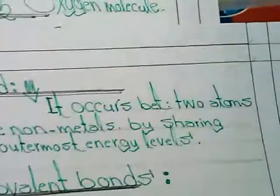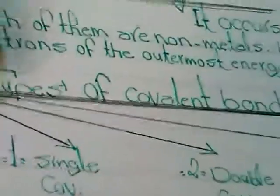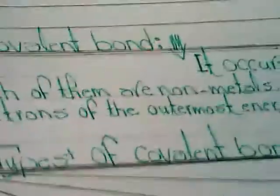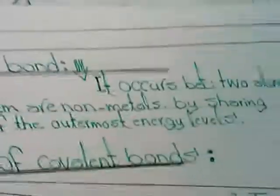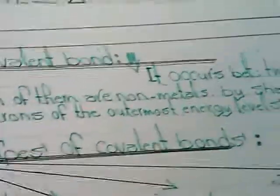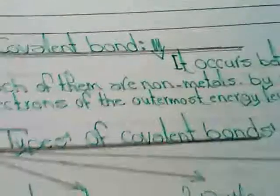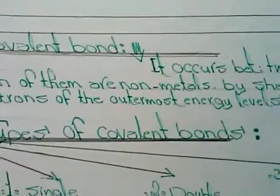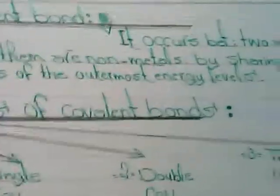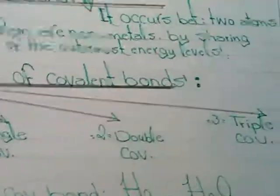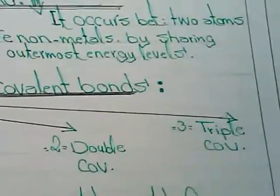Now we can move into the second type of bonds which is called covalent bond. It occurs between two atoms, each of them are non-metals, by sharing electrons of the outermost energy level. And we have three types of covalent bonds: single covalent bond, double covalent bond, and triple covalent bonds.